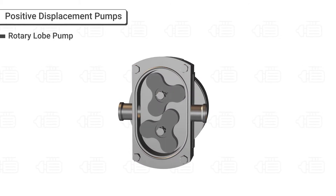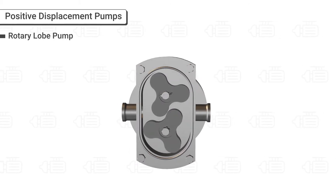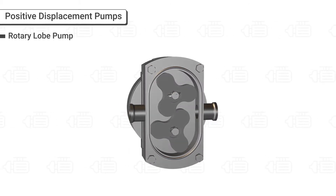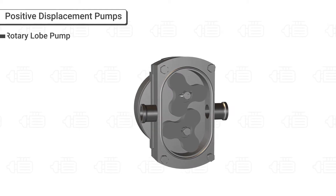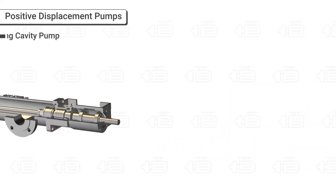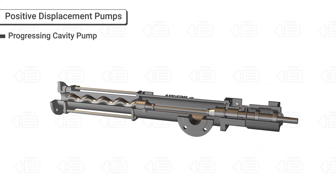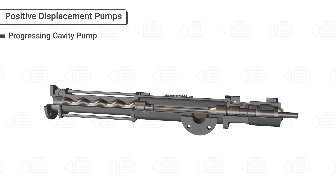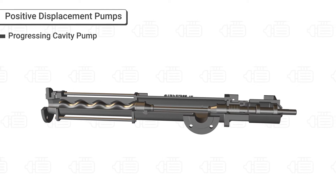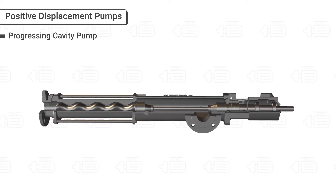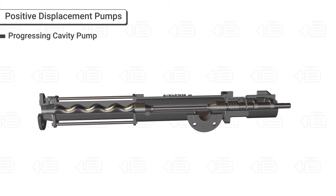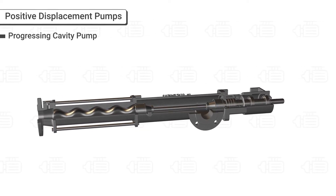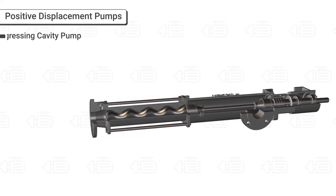The Rotary Lobe Pump uses two or more lobes rotating around parallel shafts in the pump's body to move liquids. The Progressing Cavity Pump transfers fluid through the pump through a sequence of small, fixed-shaped, discrete cavities as its rotor is turned.